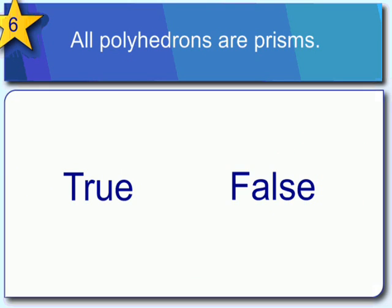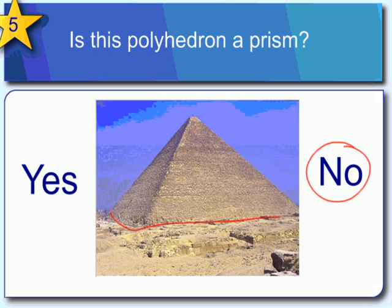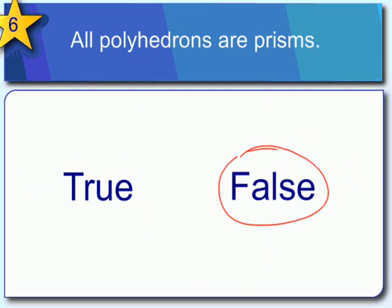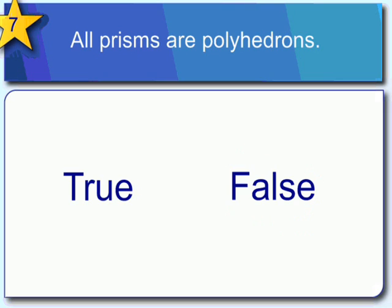True or false: all polyhedrons are prisms. The answer is false. This is a polyhedron — it's made up of flat faces — but it is not a prism. Not all polyhedrons are prisms. Now for our last question: all prisms are polyhedrons. The answer to that is actually true — all prisms are polyhedrons. And that's all there is to it — that's what prisms and polyhedrons are.